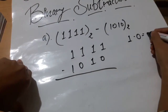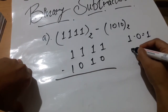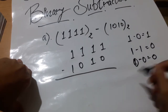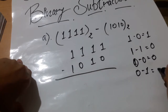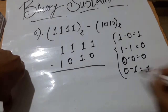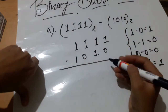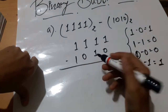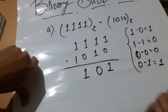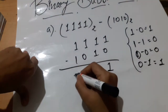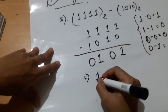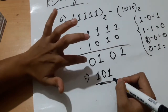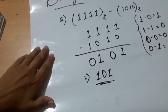Following our rules: 1 minus 0 is 1, 1 minus 1 is 0, 0 minus 0 is also 0, and 0 minus 1 will be 1. Applying these — 1 minus 0 is 1, 1 minus 1 is 0, again 1 minus 1 is 0, and 1 minus 1 is 0. So our answer will be 0101, and since the leading 0 has no meaning, our answer is 101.